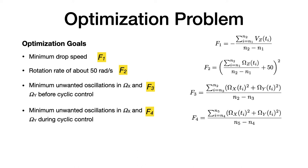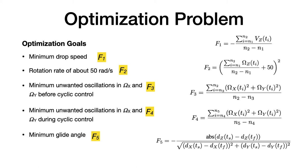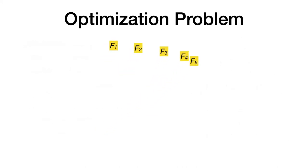Lastly, we would like to achieve the minimum glide angle, in other words, the best glide slope. This is function 5. These five functions are weighted and combined into a single objective function.